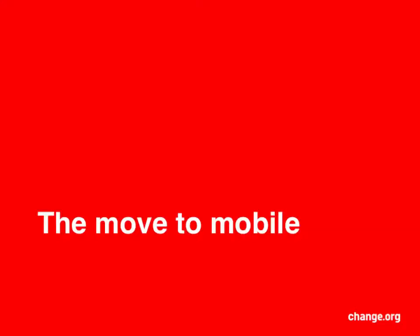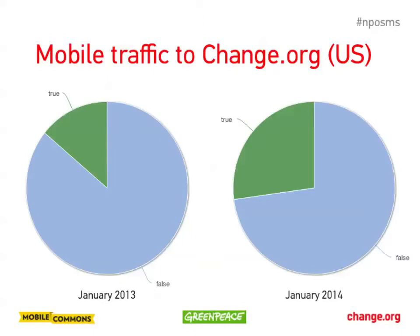Internet trend guru Mary Meeker says that if current trends continue, by the end of this year over 30% of all global Internet traffic will come through mobile devices. This is a real wake-up call for anyone trying to get their messages out online — people are consuming those messages more and more through their mobile devices. We see that on Change.org dramatically. This is a snapshot of mobile traffic to Change.org in the U.S. for January 2013 versus January 2014. We've easily doubled mobile traffic and are approaching that 30% marker, tracking to exceed it by end of year.